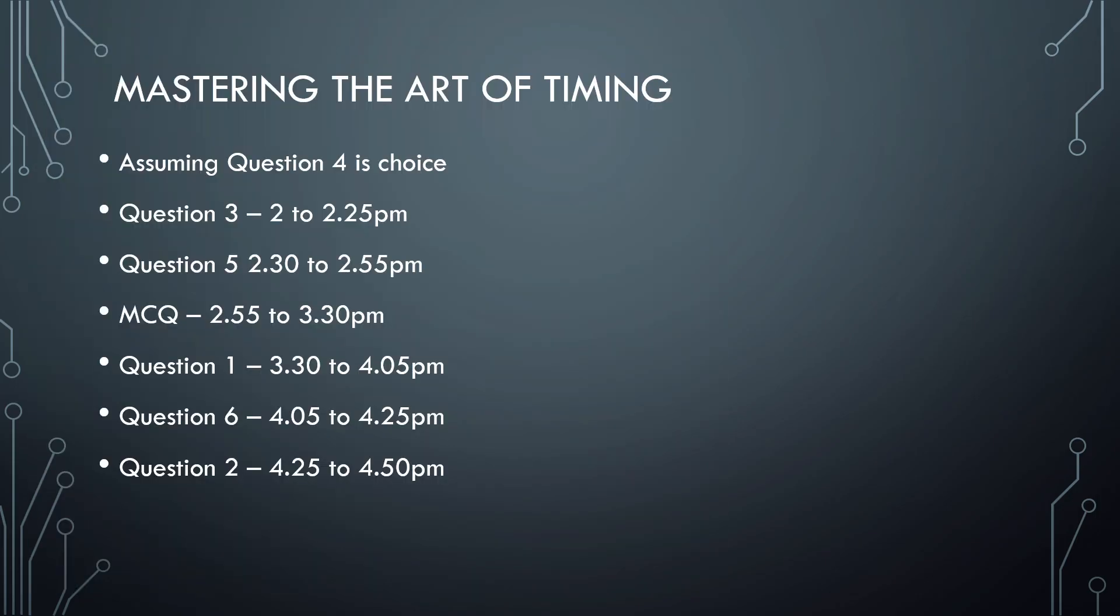So now, Question 3 - 2:00 to 2:25 pm, Question 5 - 2:30 to 2:55 pm, and MCQ you should be starting at 2:55 to 3:30 pm. So by now at least 25 to 45 marks minimum will be in your pocket, 45 to 50 by 3:30 pm.